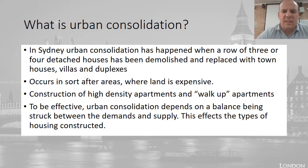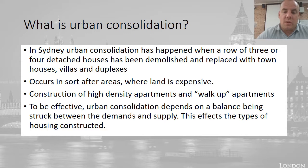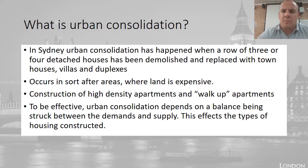You can see how three or four detached houses or a set of terraces get knocked down and replaced with townhouses, duplexes, and flats. This often happens in sought-after areas where land is expensive, so the demand is there, and people try to make more profit out of their block of land by building as many houses on it as possible. Urban consolidation depends on balancing demand and supply — you don't want to push up supply too much because that will decrease demand and push prices down.